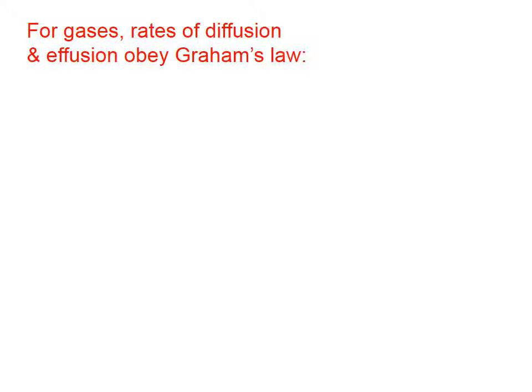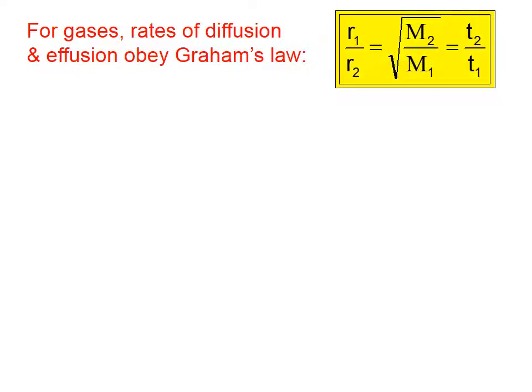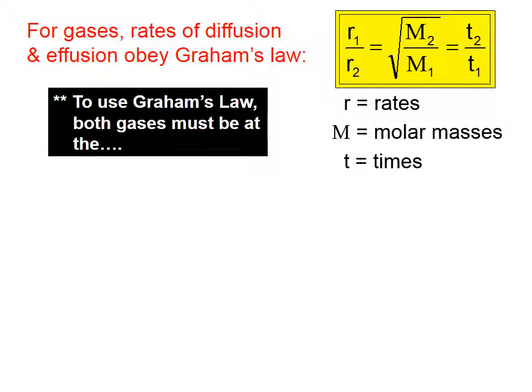For gases, rates of diffusion and effusion obey Graham's Law. And there's Graham's Law right there, where r is representing the rates, sometimes the speeds, of the two gases. M represents the molar mass, and t represents time. Now, the units for this equation are not particular at all. As long as you have the same unit for both numerator and denominator, we don't have to be picky about units. Now, to use Graham's Law, both gases have to be at the same temperature.